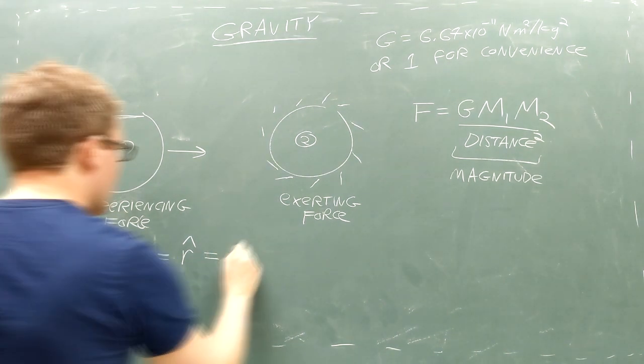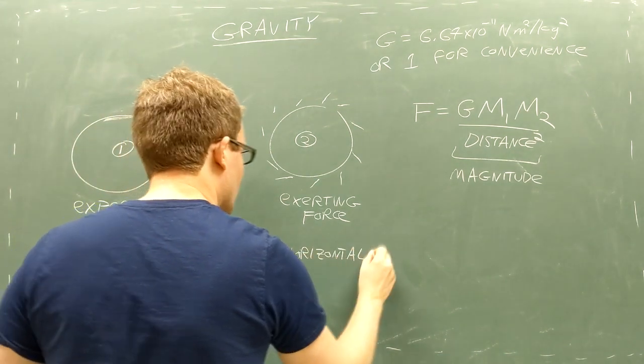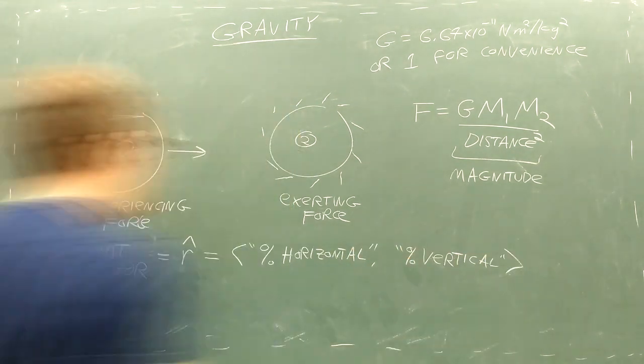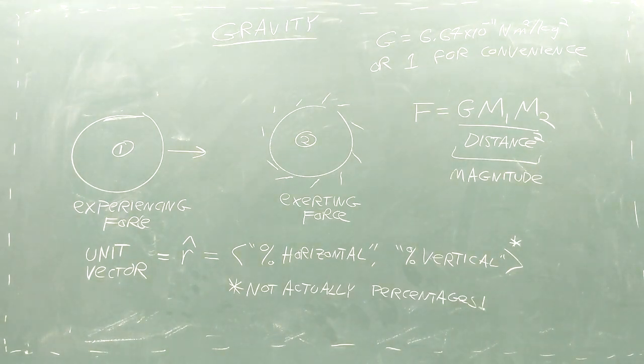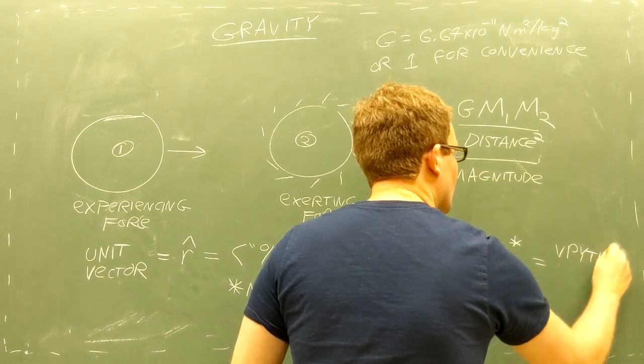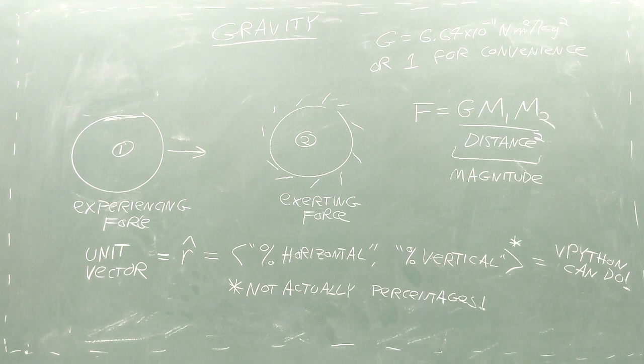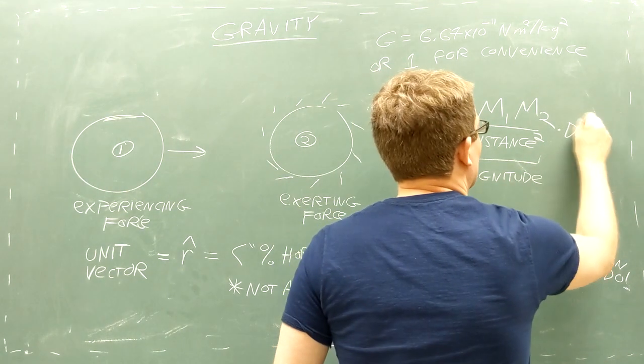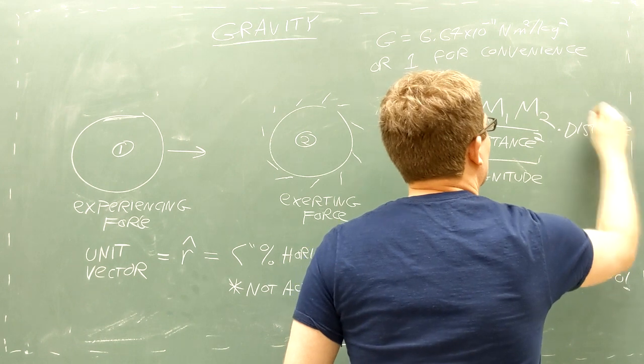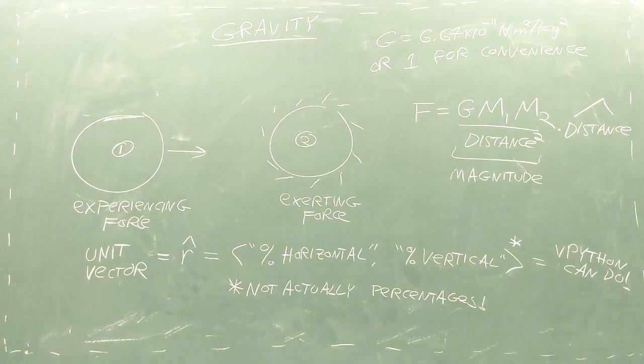You can think of a unit vector as telling you what percentage of a vector points in the horizontal direction and what percentage points in the vertical direction. VPython can automatically calculate a unit vector for us, so we won't bother with the mathy details here. In this case, we need the direction of the distance vector from object 1 to object 2, so we'll ask VPython to turn this distance into a unit vector.